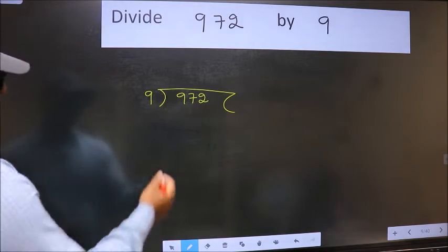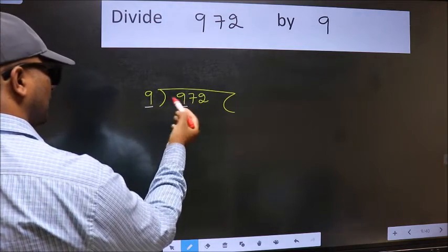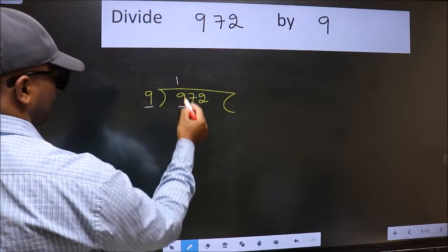Next. Here we have 9 and here 9. When do we get 9 in 9 table? 9 once 9.